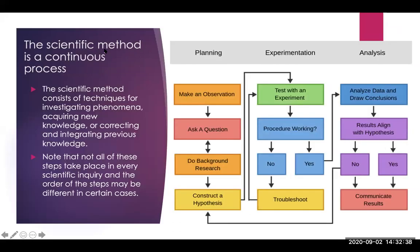The scientific method is a continuous process where we make observations and ask questions about those, and then we try to answer those questions by doing some background research to see what the scientific community already knows about this topic. If we don't feel certain with an answer and want to contribute more information on that topic, then we might construct a hypothesis so that we can conduct experiments to answer that question.